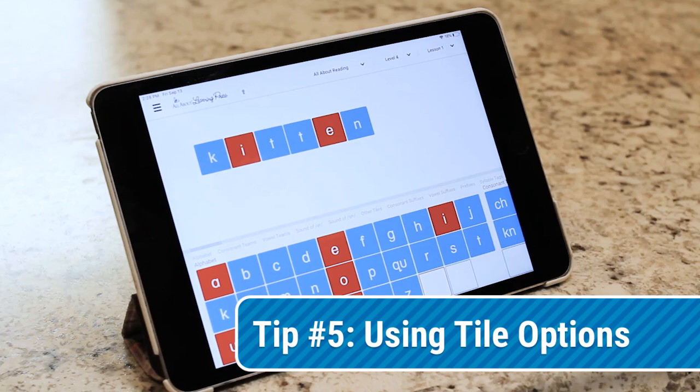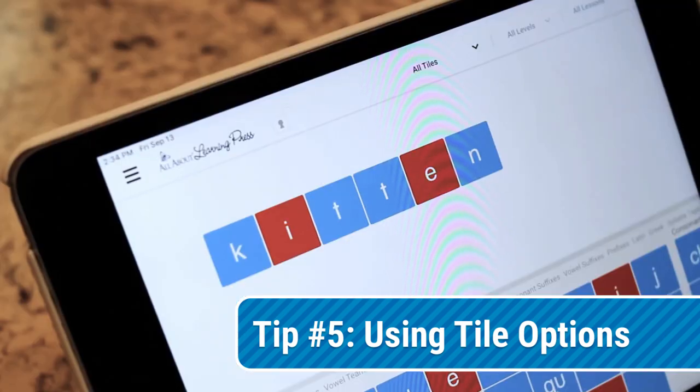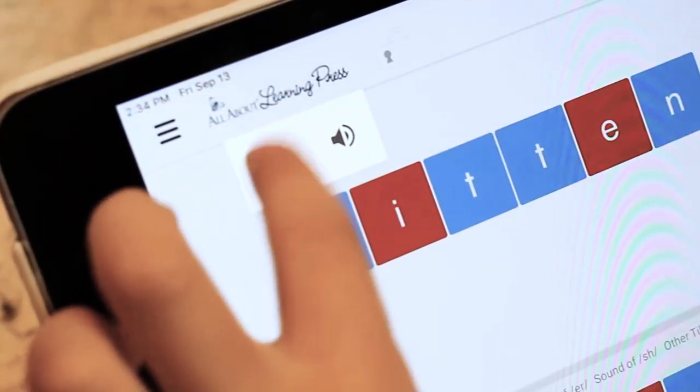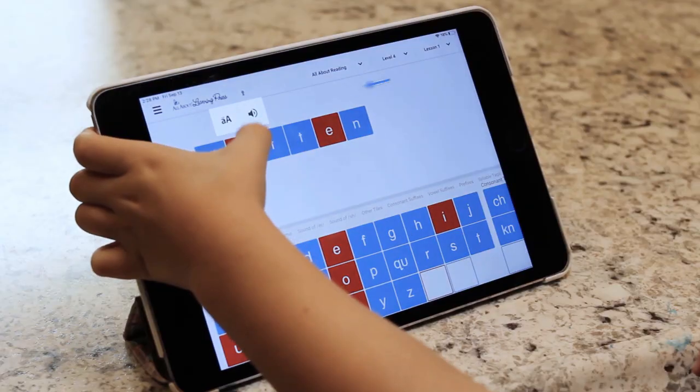If you touch and hold a letter tile, you will see a few options pop up. Using these options, you can either capitalize the tile or you can hear the different sounds the phonogram on the tile makes.